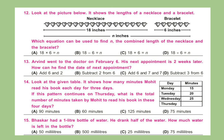Question 14: Look at the given table. It shows how many minutes Mohit read his book each day for three days. If this pattern continues on Thursday, what is the total number of minutes taken by Mohit to read his book in these four days? Question 15: Bhaskar had a one-liter bottle of water. He drank half of the water. How much water is left in the bottle?